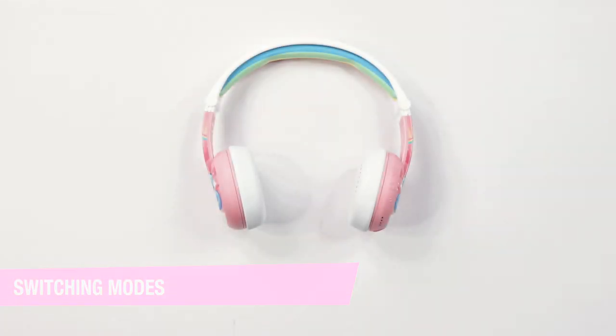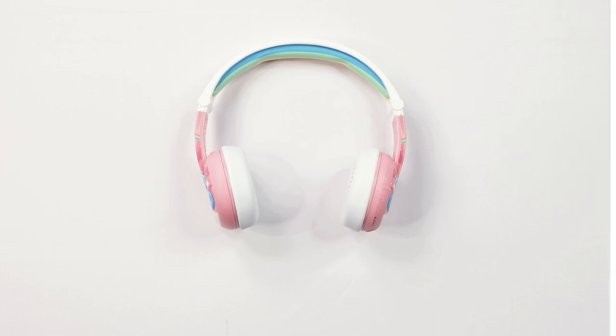Switching modes. This headphone has four audio modes. The first mode is 75 decibels. Press the volume up and volume down button simultaneously to skip through these modes.